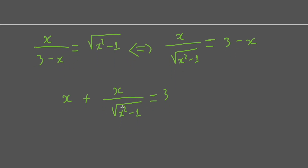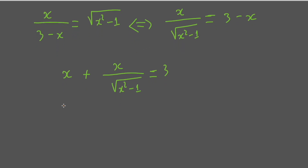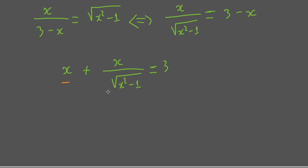In this case we need to create a substitution. We note that if we put a equal to x and b equal to x over the square root of x squared minus 1, then we will have a plus b equal to 3.